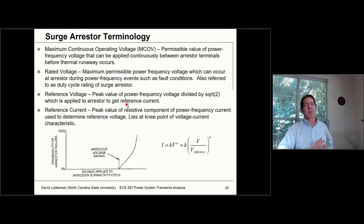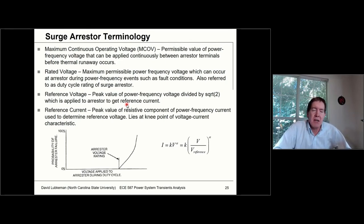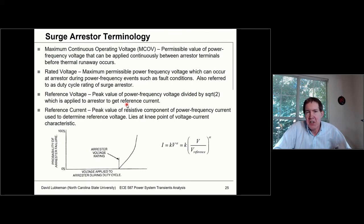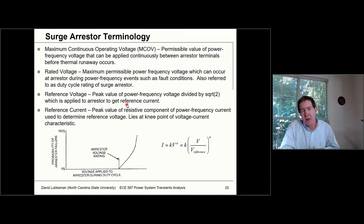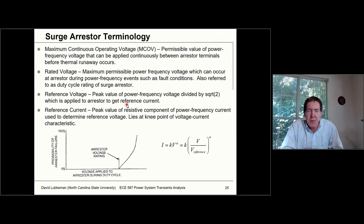As far as surge arrestor terminology, there's maximum continuous operating voltage (MCOV). With these nonlinear devices, you need to keep the voltage below a certain level; otherwise, you start drawing current which heats the device up, drawing even more current — a thermal runaway effect. We need to size the arrestor so that MCOV is not violated under normal conditions.